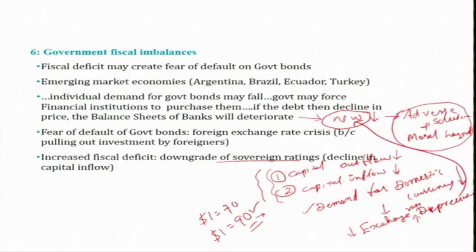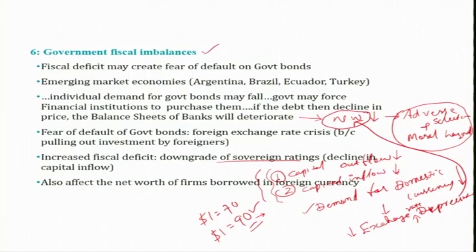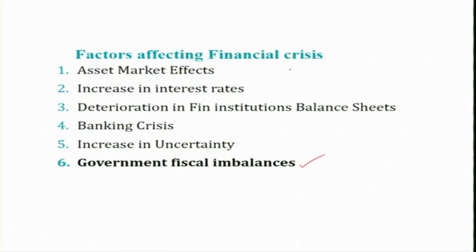This is one of the reasons how this leads to financial crisis — this is Stage 1 in the initiation of a financial crisis. The net worth of firms is affected, which then affects asset market effects and leads to financial crisis. We have discussed six factors in total. Either one or many of these will be happening simultaneously or alone. Any of these can be the seed for financial crisis.